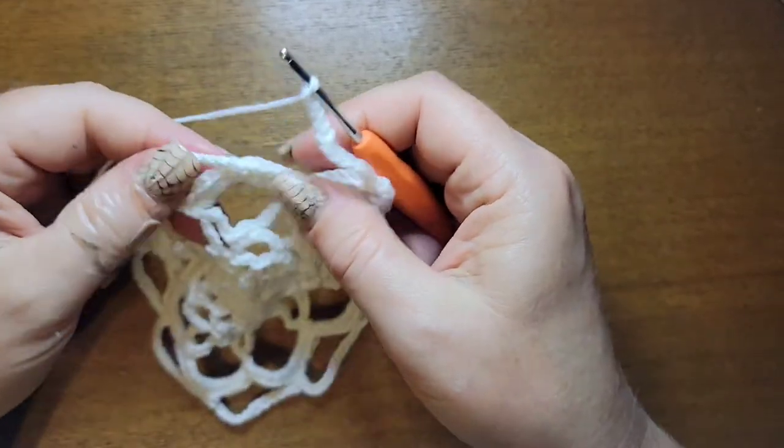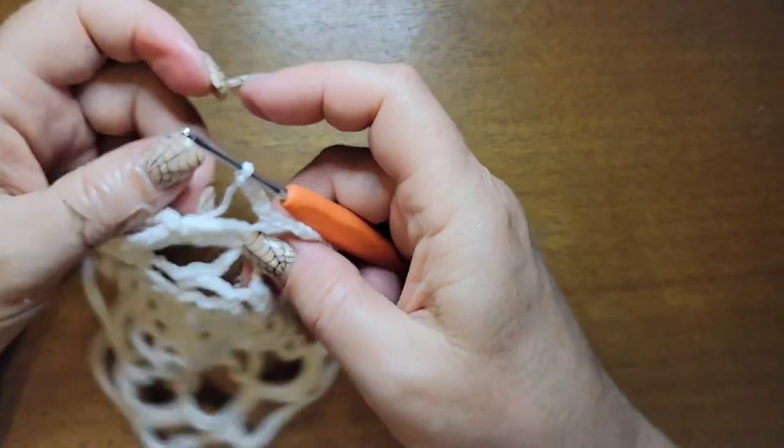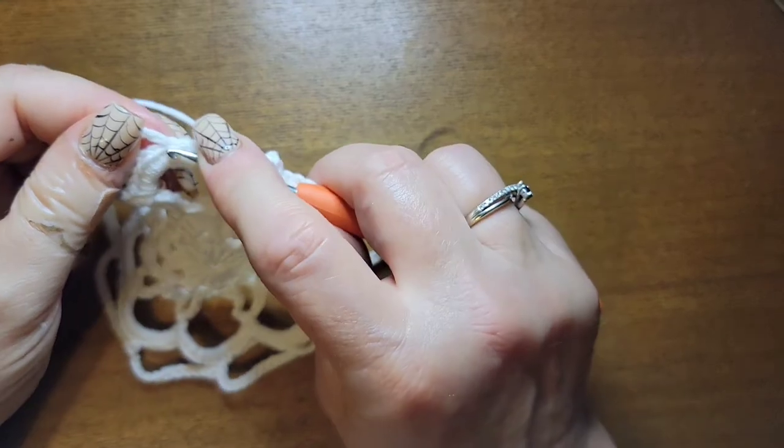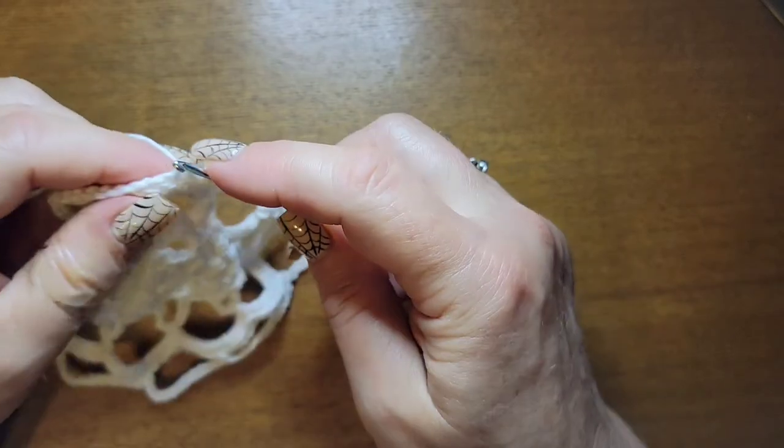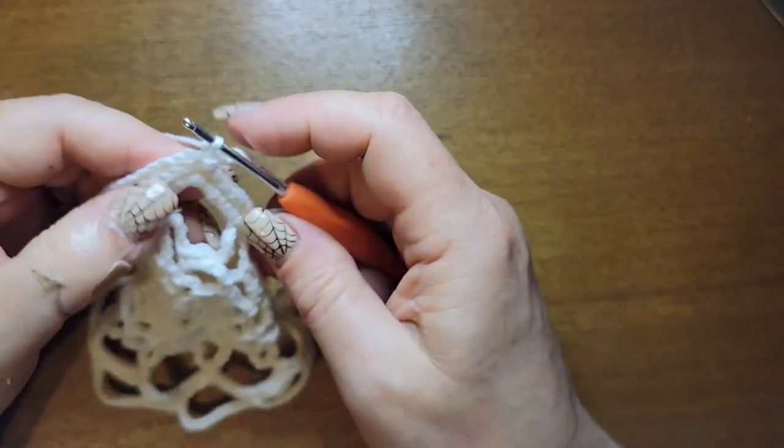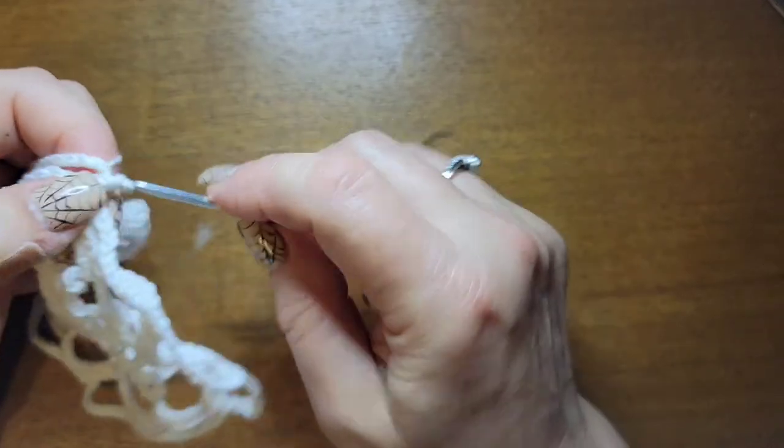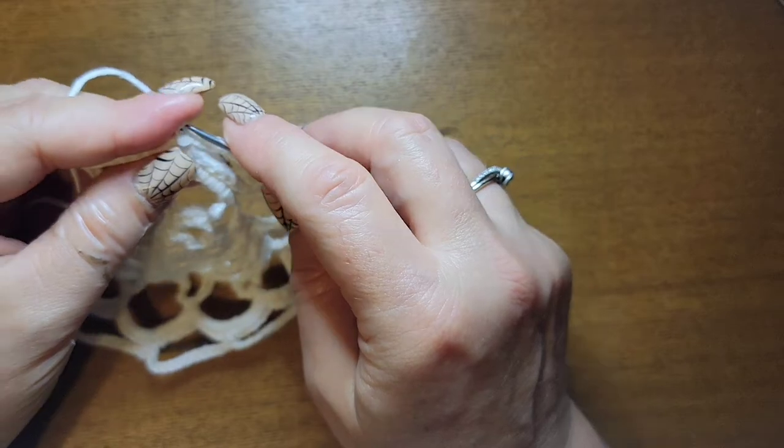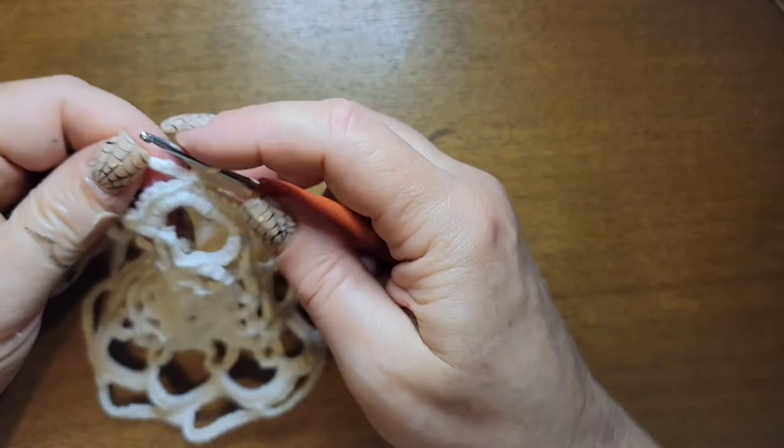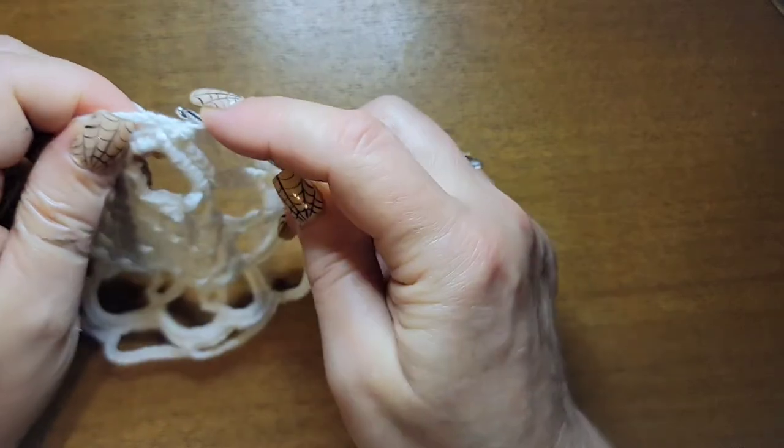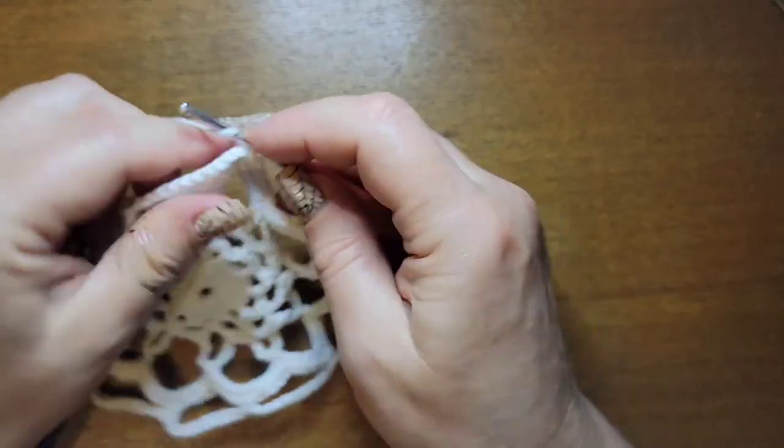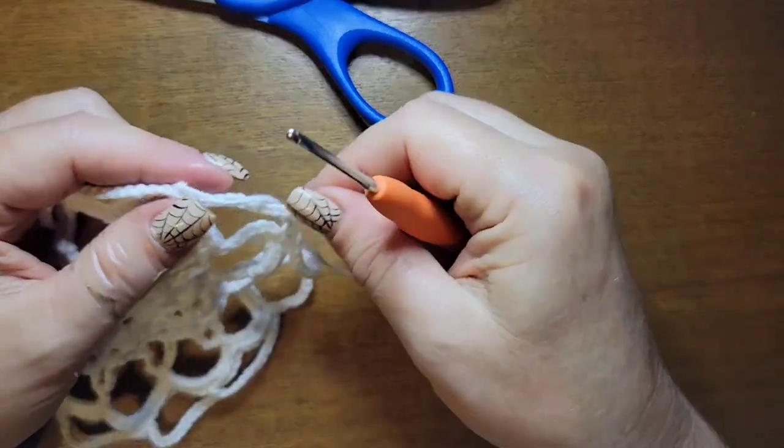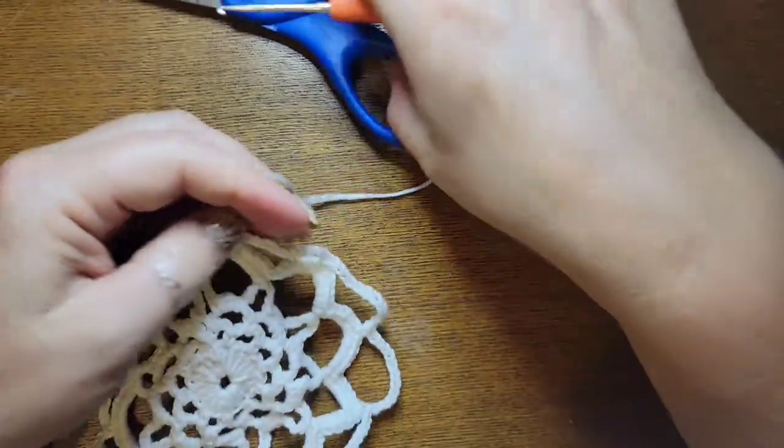You slip stitch into your beginning. And then what I do is I chain one and I just slip stitch again just to try to help secure it a little bit. You can weave in your ends if you don't feel it's secure.